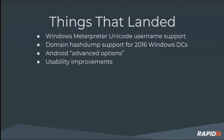We also had support added in the Windows Meterpreter for Unicode usernames and domain hash support, plus support for Windows 2016 domain controllers — in some cases that means printing out a nice error message but gracefully handling it. We also had some Android advanced options added, including things like enabling debug and enabling the wake lock. There were also some usability improvements: tab completion now has more path context for a module, so it makes more sense of where you are in the tree when using MSFconsole.